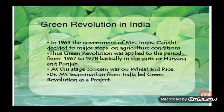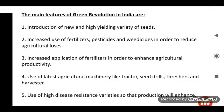Green Revolution in India: In 1965, the government of Mrs. Indira Gandhi decided to take major steps regarding agriculture conditions. Thus the Green Revolution was applied to the period from 1967 to 1978, basically in the parts of Haryana and Punjab. The main concern was on wheat and rice production. Dr. M.S. Swaminathan from India led the Green Revolution as a project.